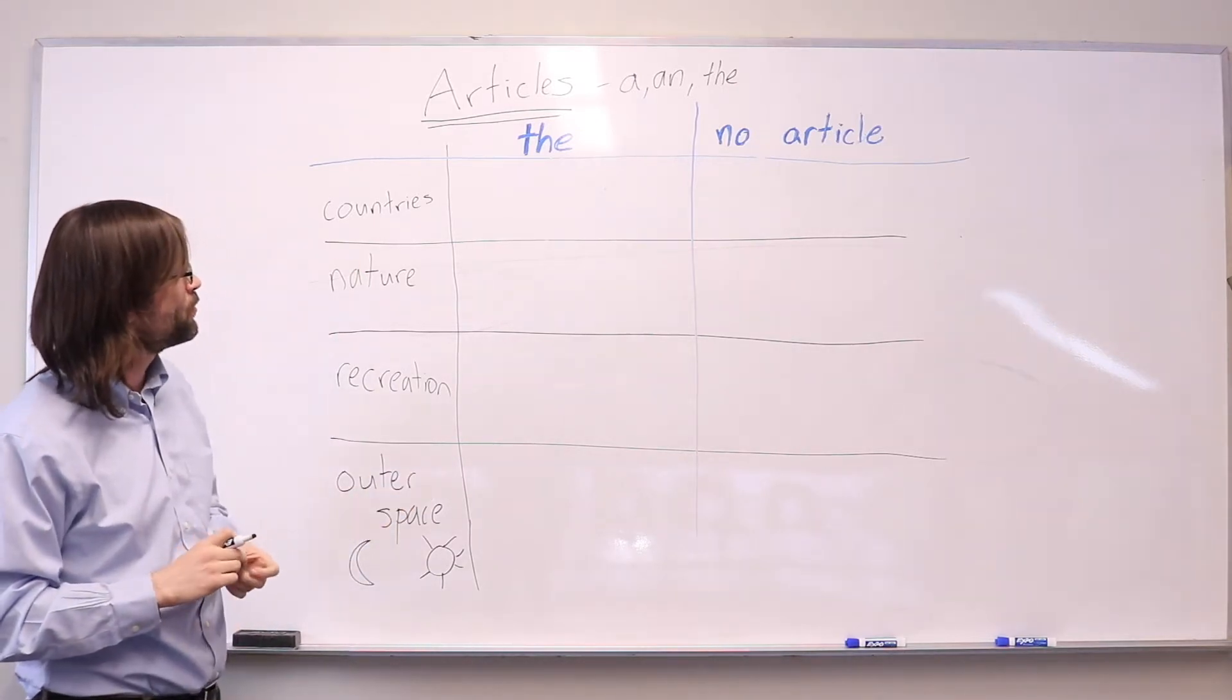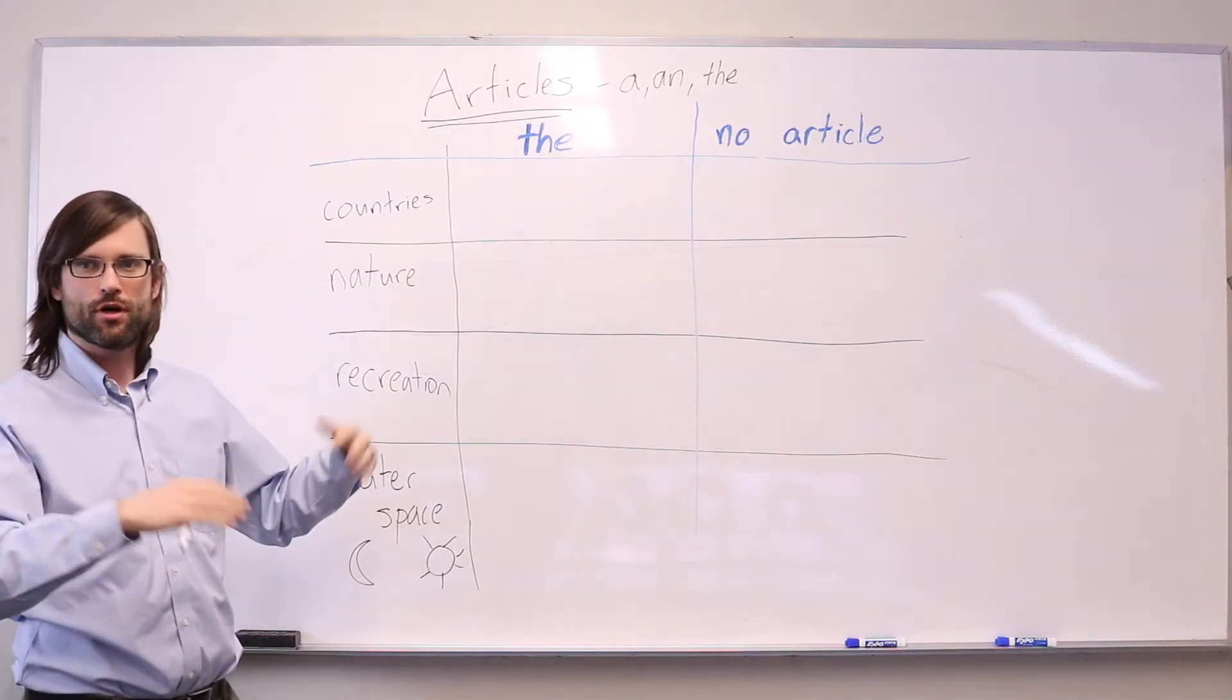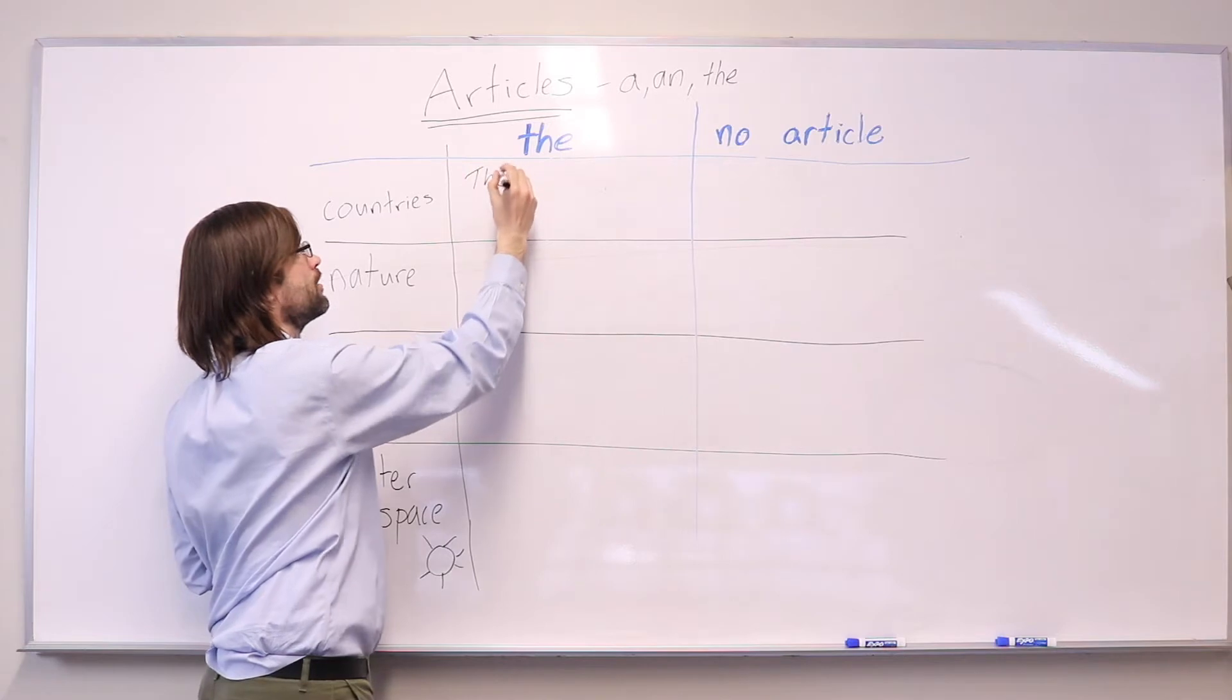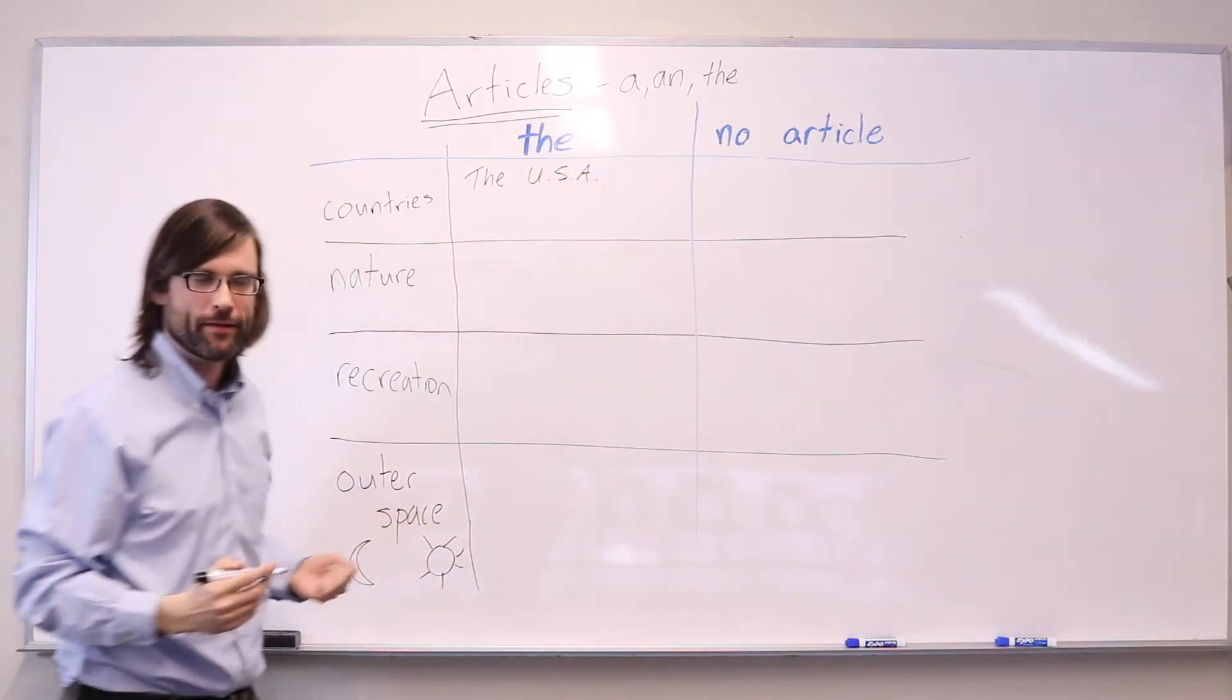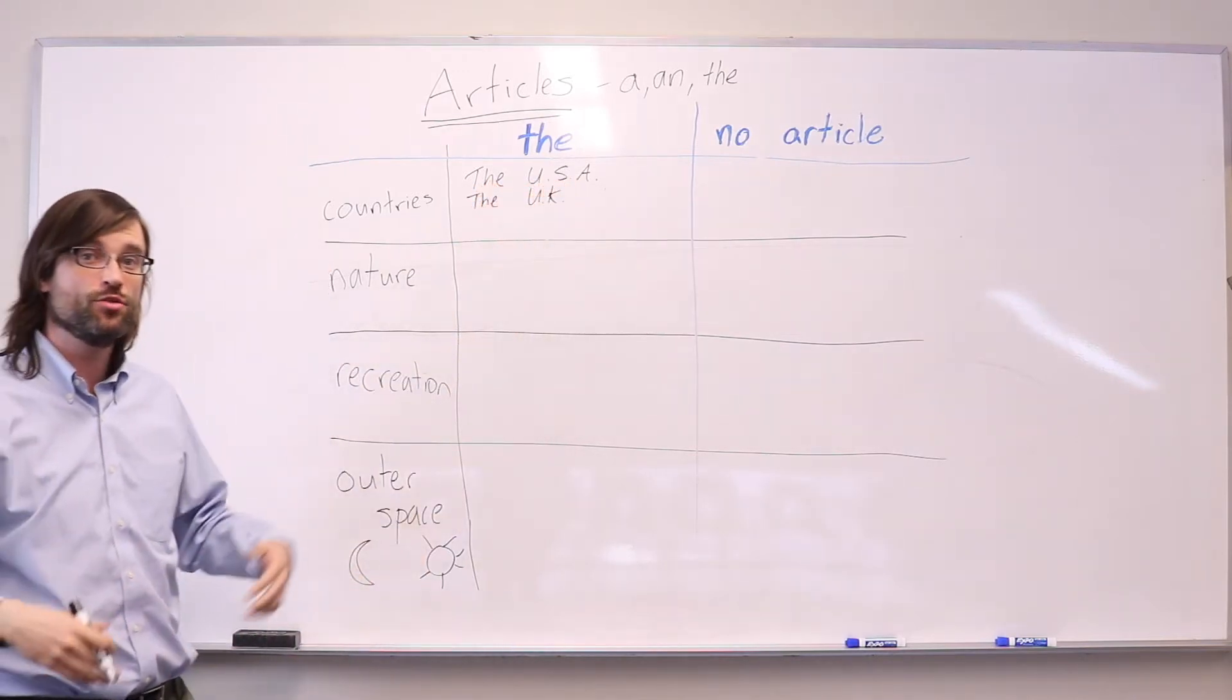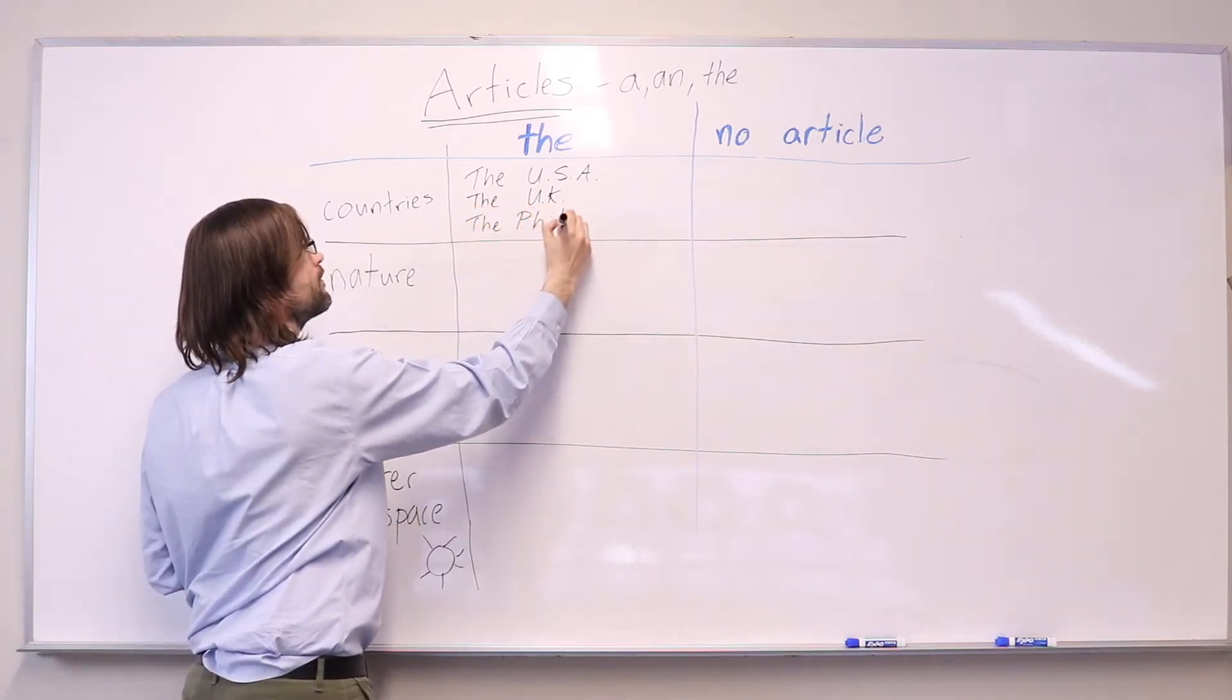So first, when we talk about countries, we use the that talks about a group or a collection or before a noun that describes a country. For example, the United States of America, the United Kingdom. That also applies to plurals. The Philippines.